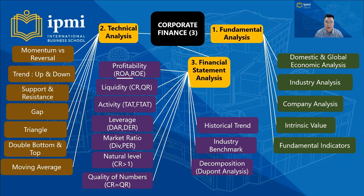In part three of the mind mapping, we cover fundamental analysis, technical analysis, and financial statement analysis. Fundamental analysis includes domestic and global economic analysis, industrial analysis, company analysis, intrinsic value, and fundamental indicators. Technical analysis consists of momentum, fast reversal, trend up and down, support and resistance, gap, triangle, double bottom and top, and moving average. Financial statement analysis covers profitability, liquidity, activity, leverage, market ratio, natural level, quality of numbers, historical trend, industry benchmark, and decomposition using DuPont analysis.